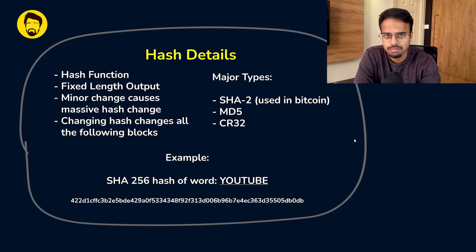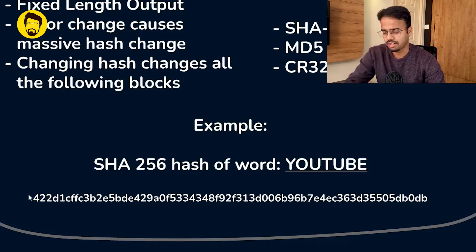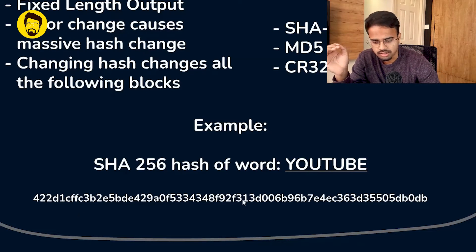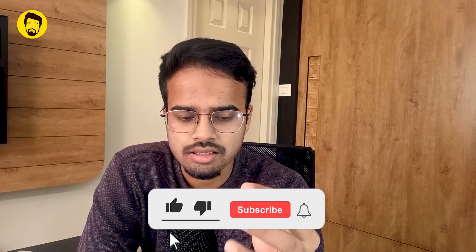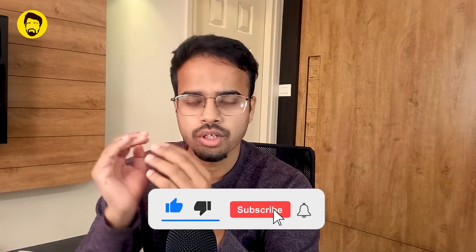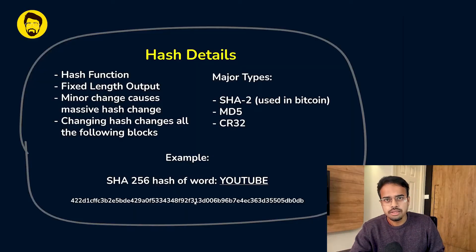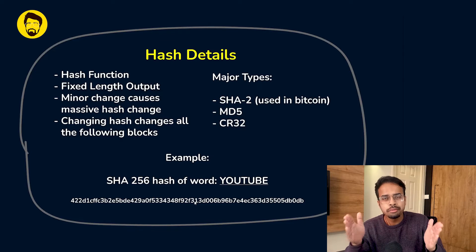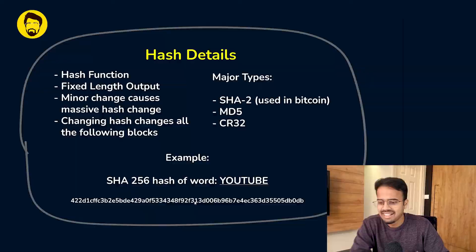Hashes are not this simple to look at. For example, the word 'youtube' has a SHA-256 hash — that's a kind of hash function — which looks like a lengthy hexadecimal fixed-length string. What happens is you take whatever data you want to convert, pass it through a special function called a hash function, and even if you take a gigabyte of data or just one word, the output is always a fixed length. That's the beauty of the hash function.